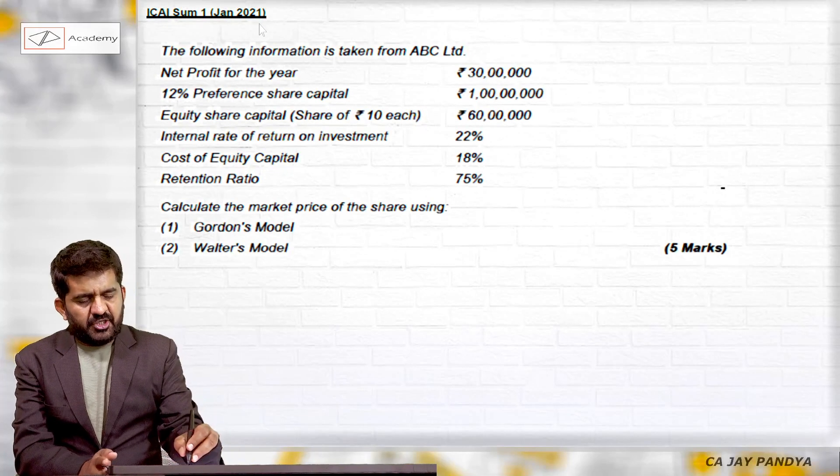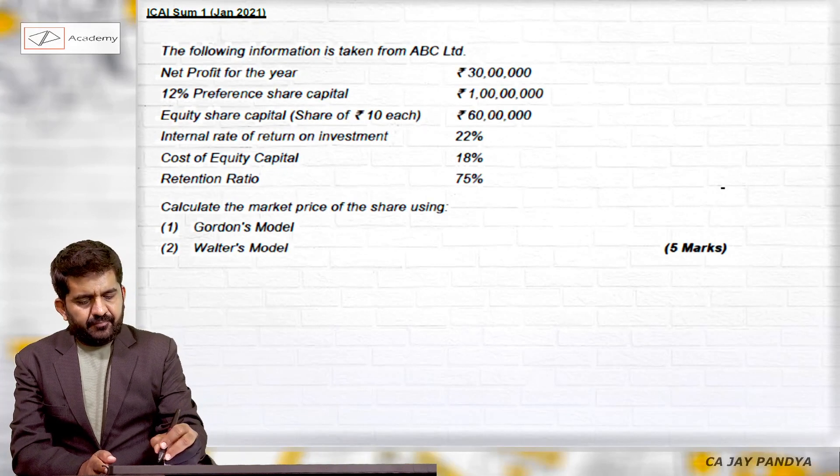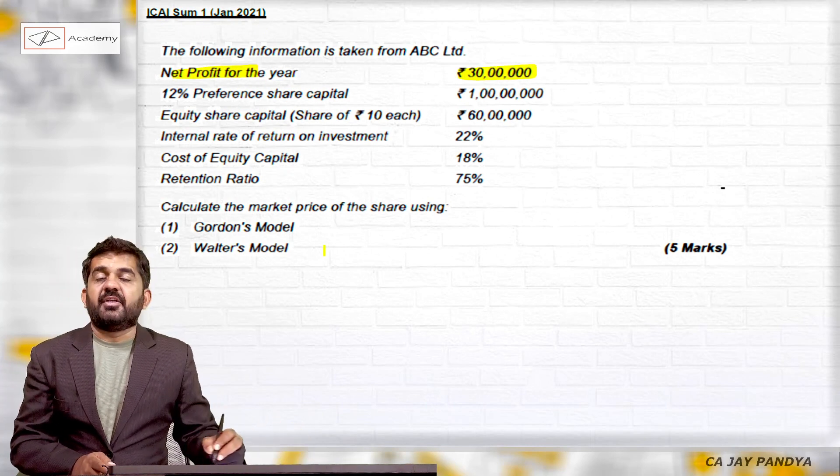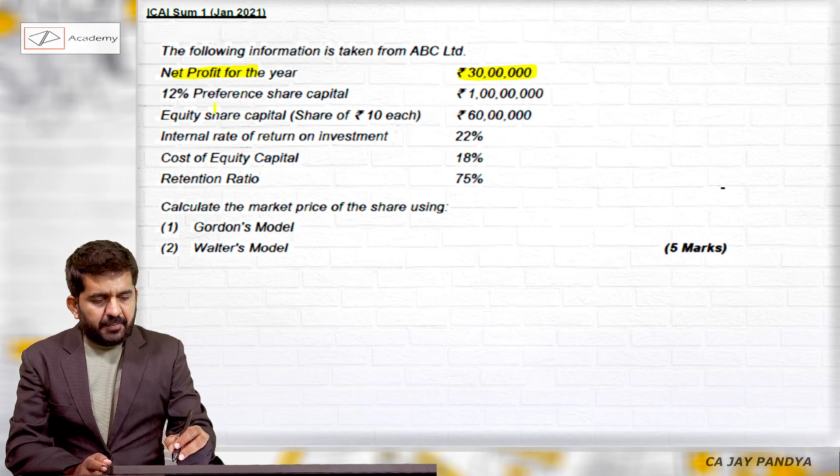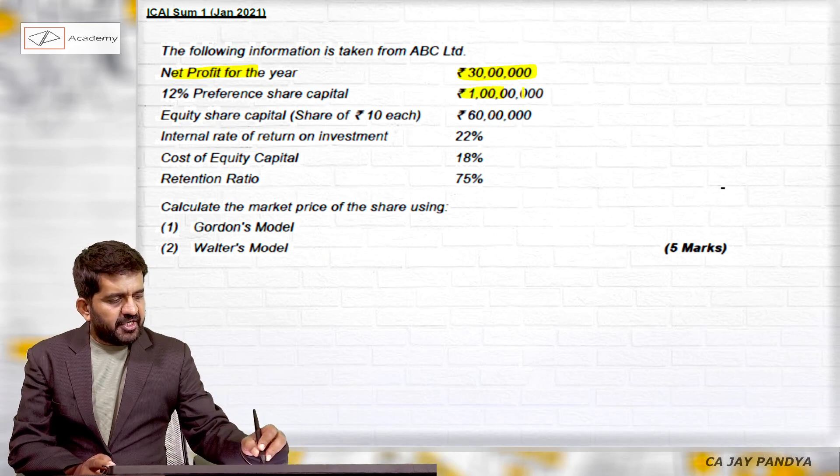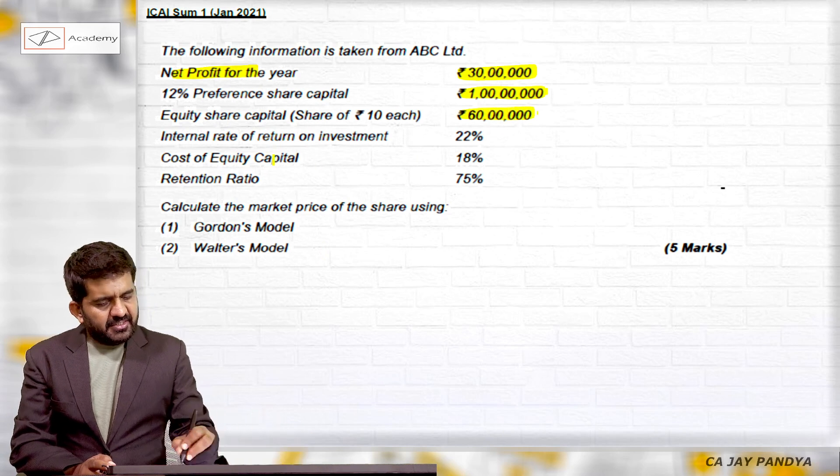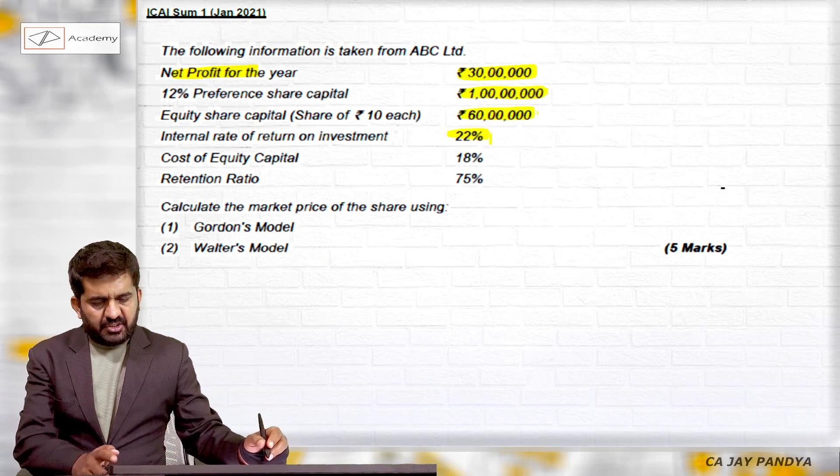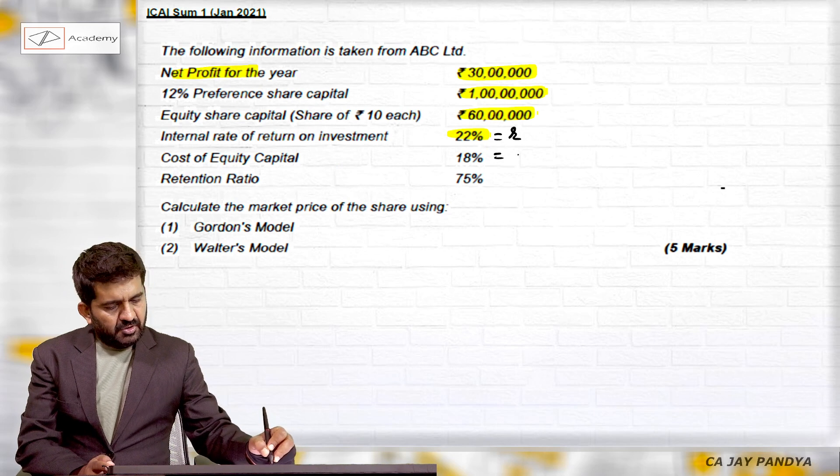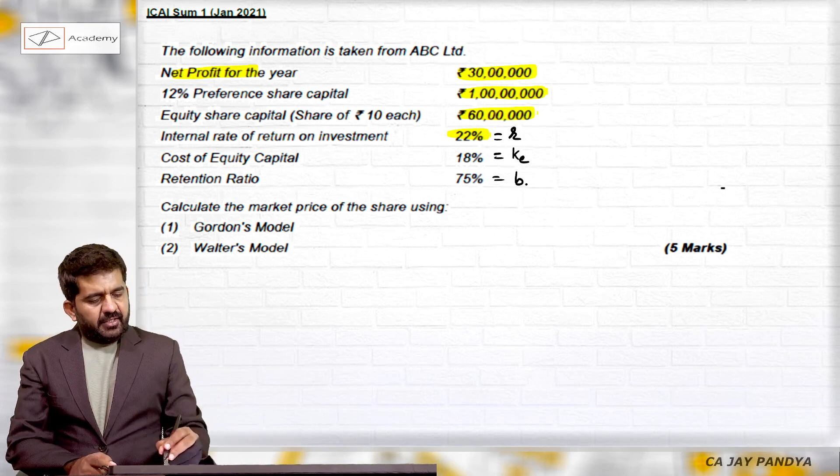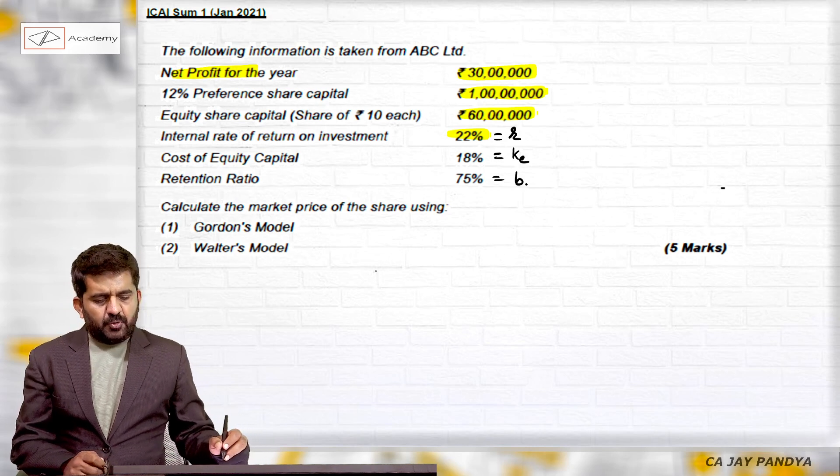ICAI Sum number one, January 2021. The following information is taken from ABC Ltd: Net profit for the year is 30 lakhs, which is EAT or PAT. 12% preference share capital of 100 lakhs, equity share capital 60 lakhs, internal rate of return on investment 22% (this is r), cost of equity is Ke, retention ratio is b. Calculate the market price of the share using Gordon model and Walter model.